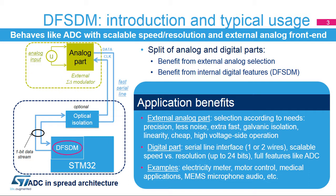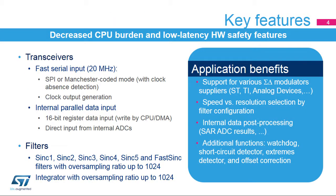The DF-SDM is able to process the external serial data and also the internal parallel 16-bit data transfer provided by the CPU or the Direct Memory Access Controller, or DMA, from memory. Transceivers provide the serial connection to the external sigma-delta modulator. They support serial connections with configurable protocols, SPI or Manchester-coded, and configurable parameters.